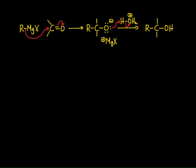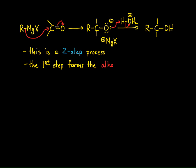Organolithium reagents and Grignard reagents react the exact same way. This is always a two-step process, and you have to show it as such in the reagents. The first step always forms the alkoxide, and then the second step is a proton transfer from the acid to the alkoxide, so you get protonation to occur.